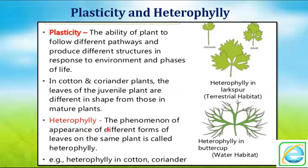The same phenomenon is heterophylly — the appearance of different forms of leaves on the same plant. On a single plant, we find different kinds of leaves. Such kinds of leaves are also found on coriander. On a mature plant we observe different kinds of leaves. Different forms found on the same plant is called heterophylly. These two concepts — plasticity and heterophylly — are easily observed in plants and occur because of the response to the environment and the phases of life.